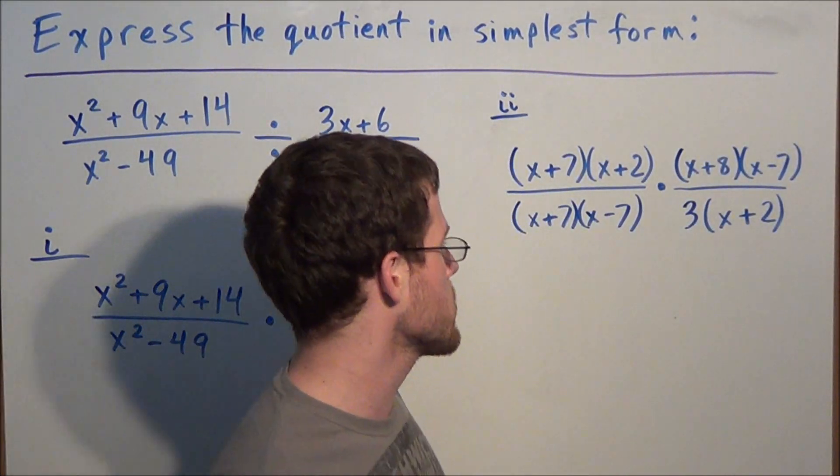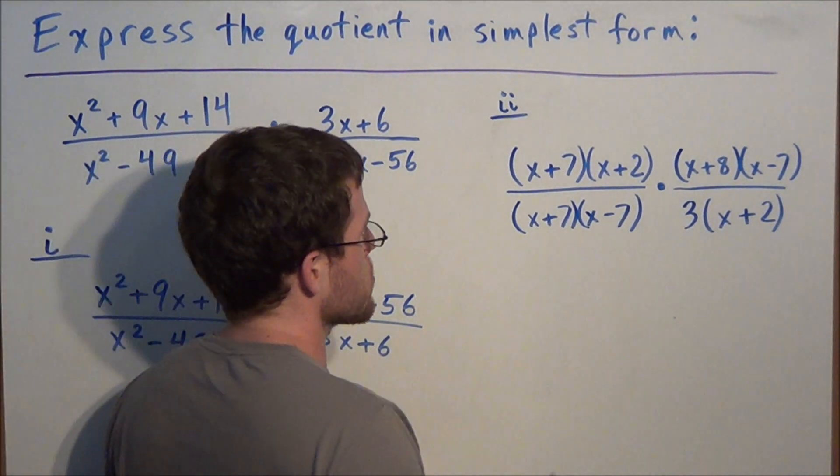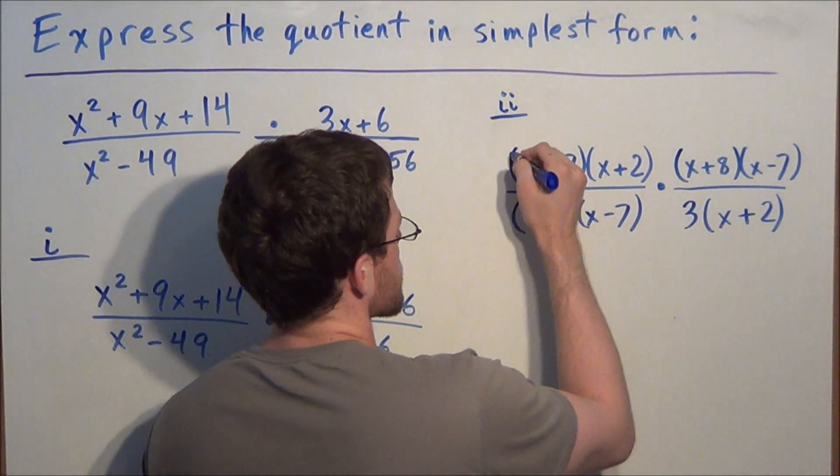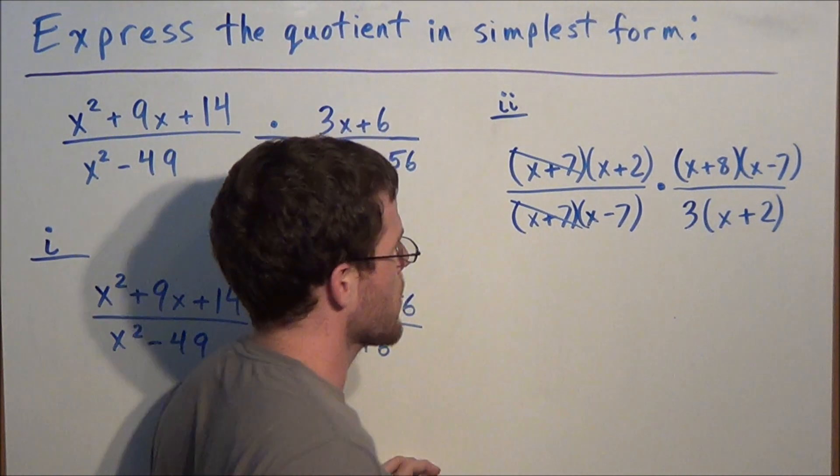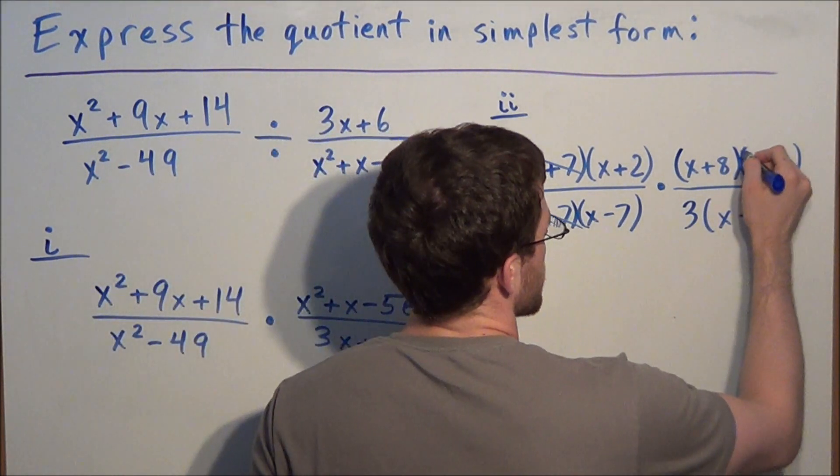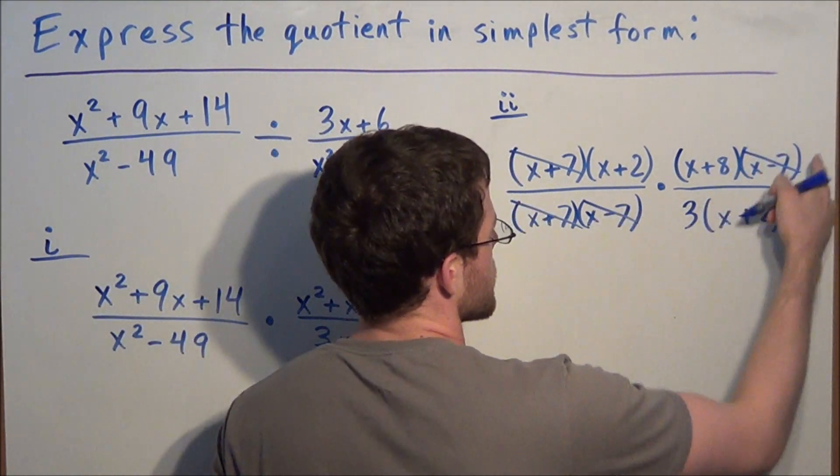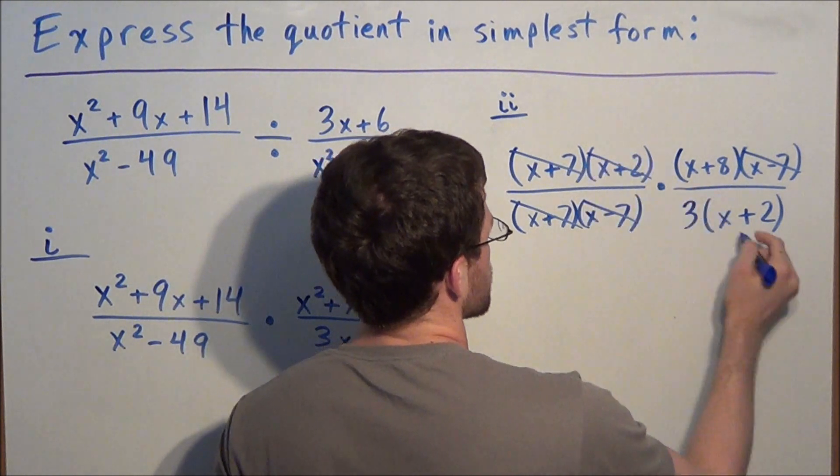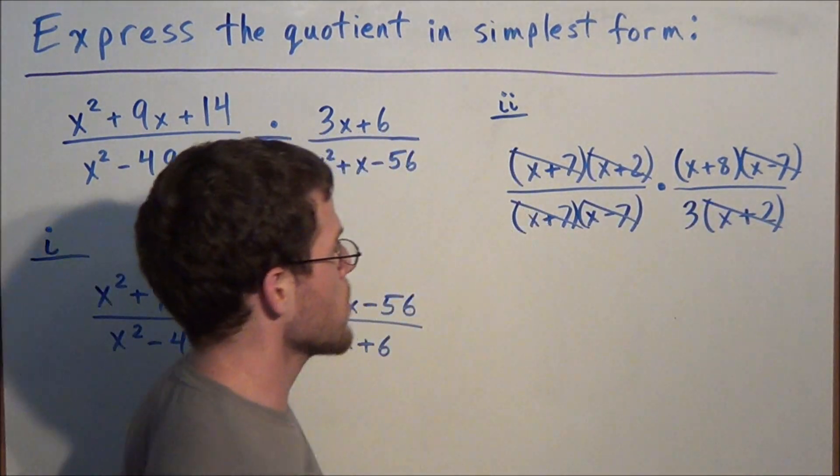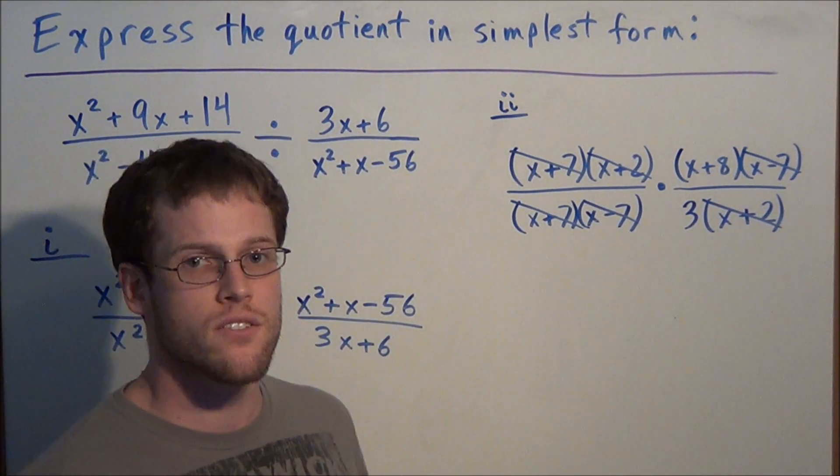Now at this step, we're going to cross out common factors. Notice between the numerator and denominator, we have x plus 7 over x plus 7. That will cancel. We have x minus 7 over x minus 7. And finally, we have x plus 2 over x plus 2. Now that all the common factors have been canceled out,